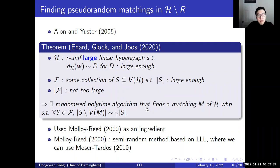To show this, they used the hypergraph coloring result by Molloy and Reed. In the proof of Molloy-Reed, they use a semi-random method based on the Lovász Local Lemma. Because we have an algorithmic Lovász Local Lemma by Moser and Tardos, we can transform their proof into an algorithmic proof.